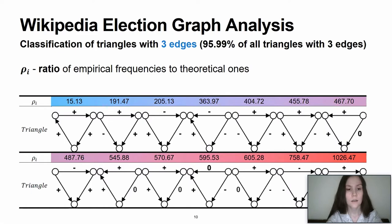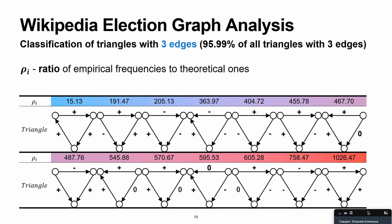And here on this slide, a selection of the triangles with 3 edges is presented. In total, the listed triangles cover 95.99% of all triangles with 3 edges. This table does not include 24 triangles that amount to only 4% of the total population. Thus, the collection shown is deemed representative.